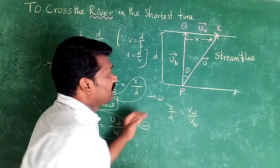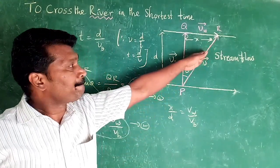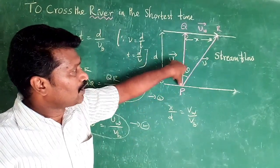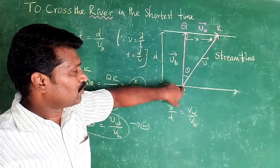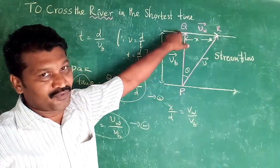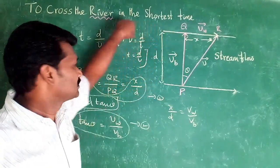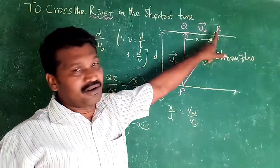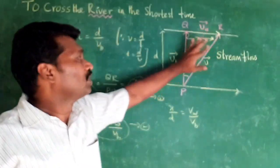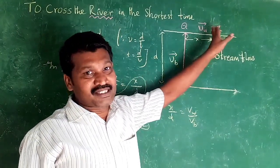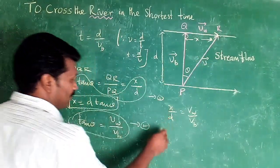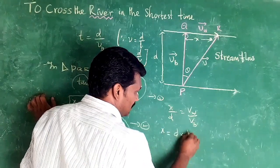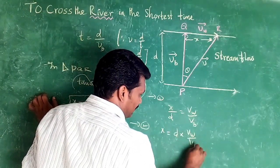So we can calculate the drift distance. From the relation derived, x is equal to D multiplied by V_water over V_boat.